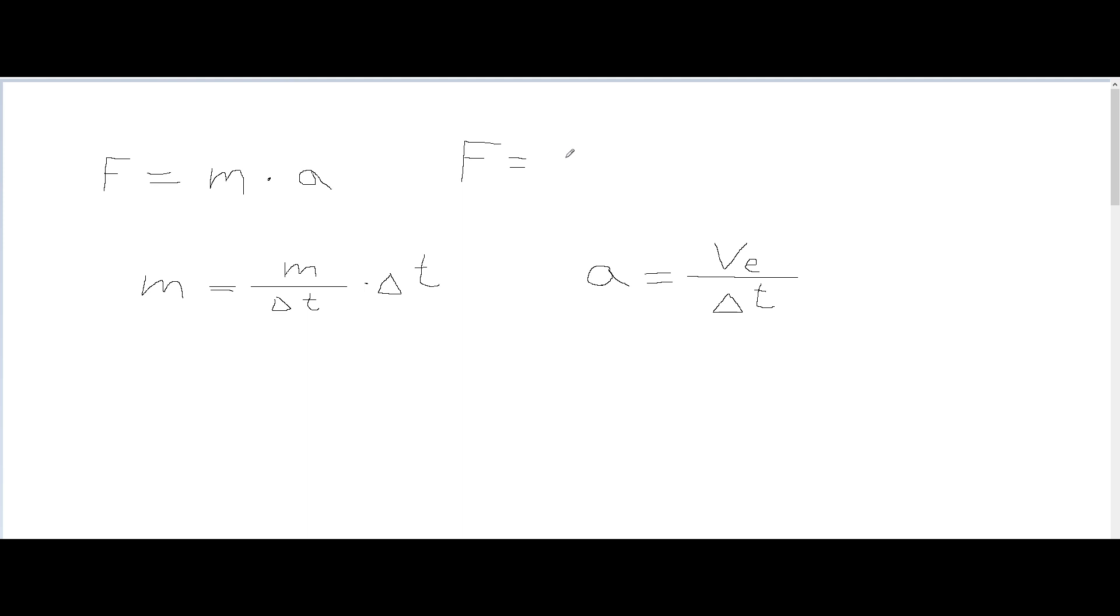So we can rewrite this equation that we have here, F equals M times A, as M divided by delta T times the exhaust velocity. And what ends up happening is the delta T that's being multiplied on the left gets divided out, so to speak, by the delta T on the right. And what we can do is rewrite that M divided by delta T as the mass flow rate, or M dot. It's just the M with the dot on top of it. And that is essentially just how much fuel is being burned up each second. It's a pretty simple idea. But that's just a new variable. That one's going to stick around, so it's important to get the idea with that one.